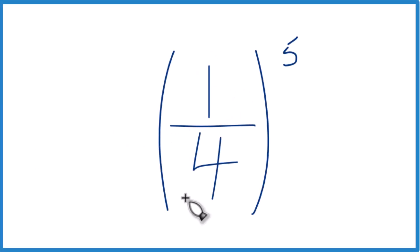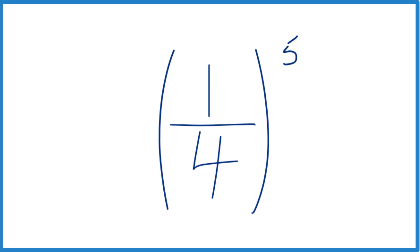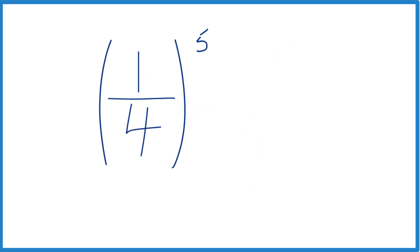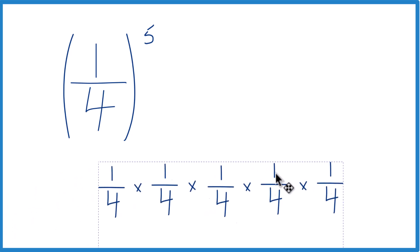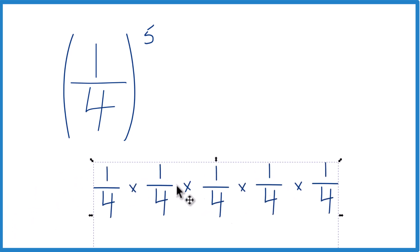So how do you get 1/4 to the 5th power? One way to think about it: 1/4 to the 5th power is just 1/4 times itself 5 times, like this here.